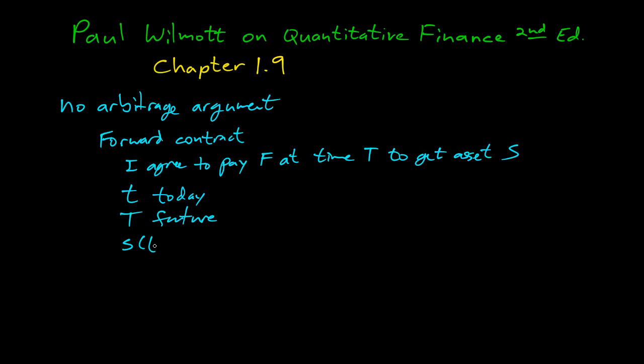And let's say S(t) is the spot price of the asset. Let's say it's a stock, for instance. So what happens? My future profit/loss will be -F plus S(T). So I pay F and I get S(T) in the future. Right away, nothing happens.